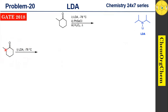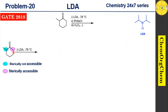This substrate has two acidic sites: one is sterically crowded and the other is not sterically crowded. Because this second site is sterically accessible, LDA readily abstracts the proton from that site.